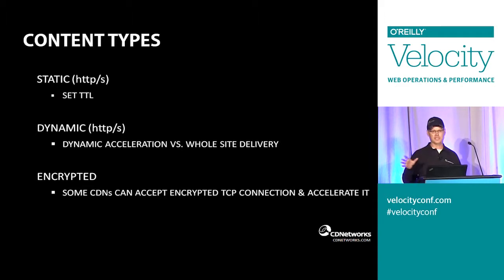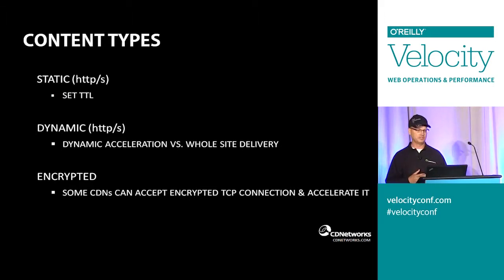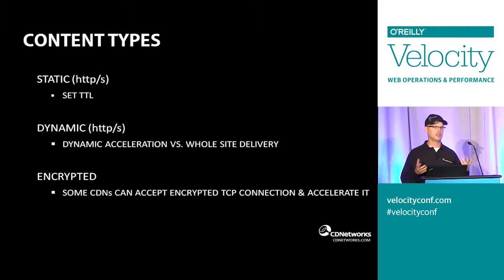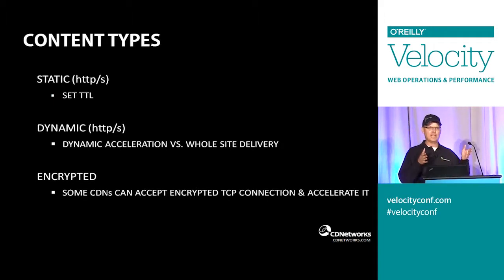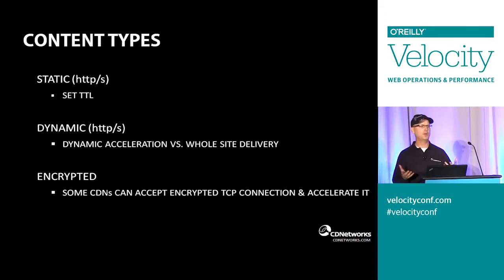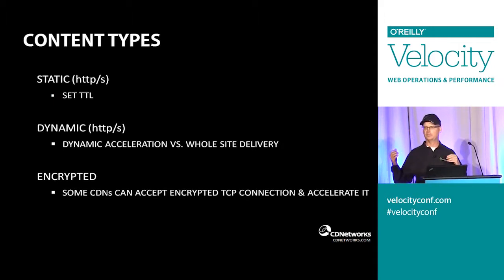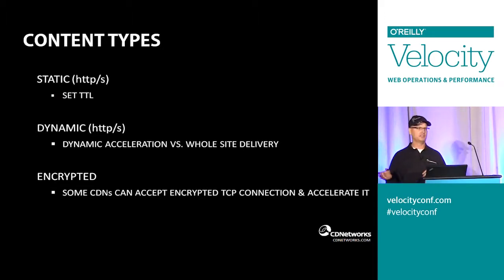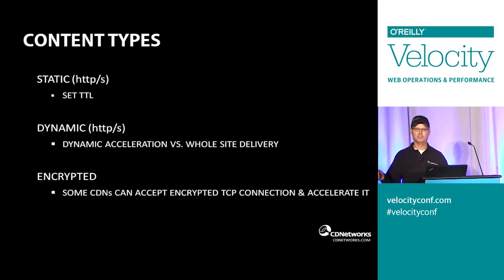When I talk about dynamic acceleration, I mean where the CDN or a WAN acceleration vendor is actively doing something to improve performance in the first mile, middle mile, and last mile — as opposed to whole site delivery, which is more of just a relay. Whole site delivery handles static traffic in the standard way, but dynamic traffic just gets passed through with no acceleration. So there's a difference between a path that has active acceleration and a path that is just being passed through.